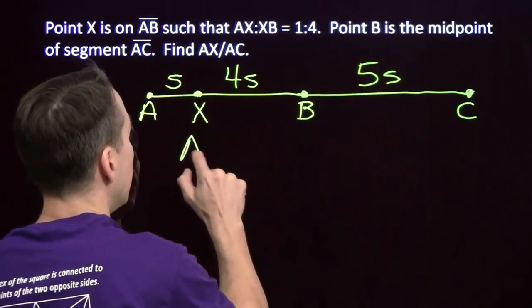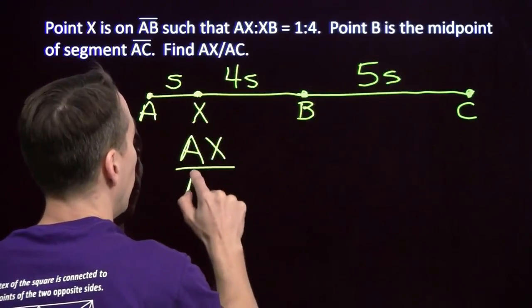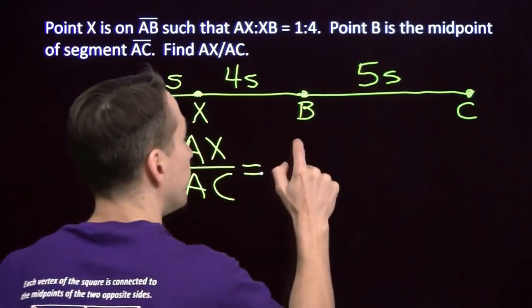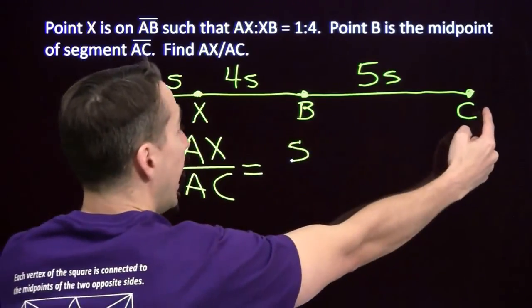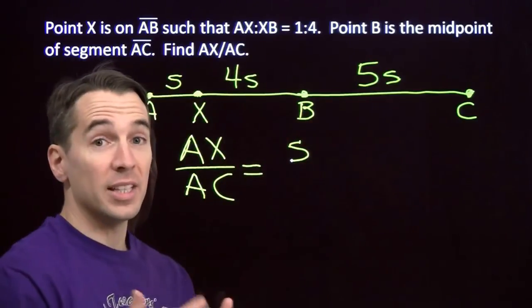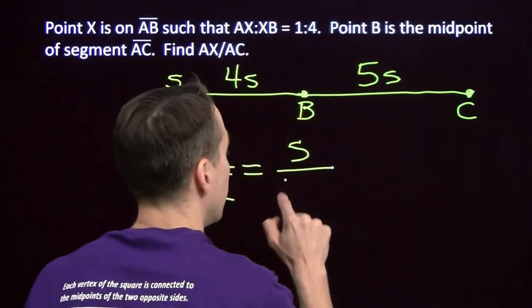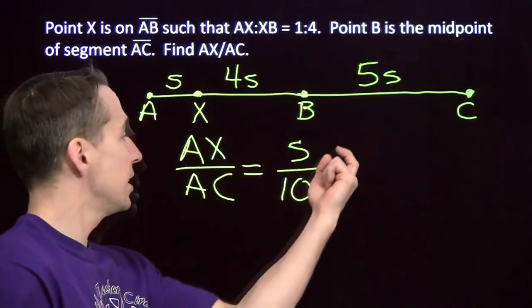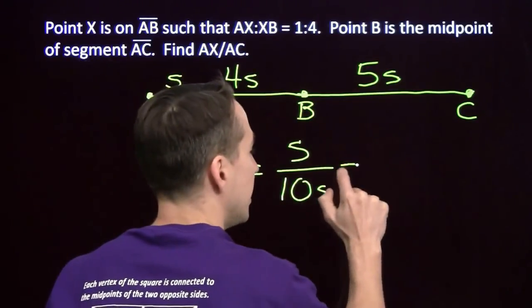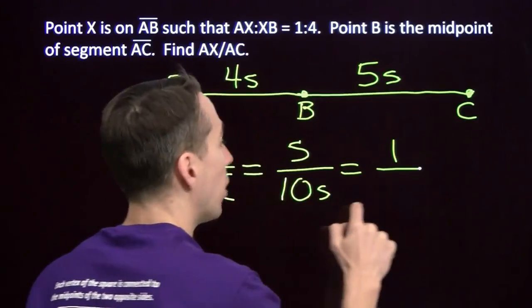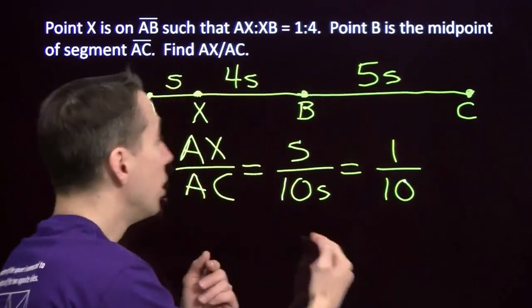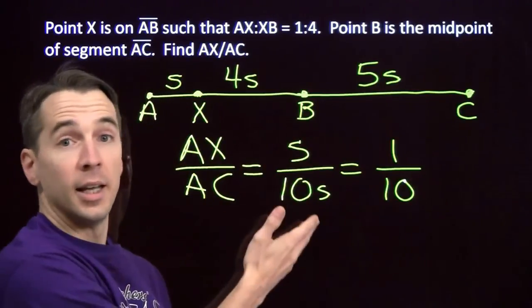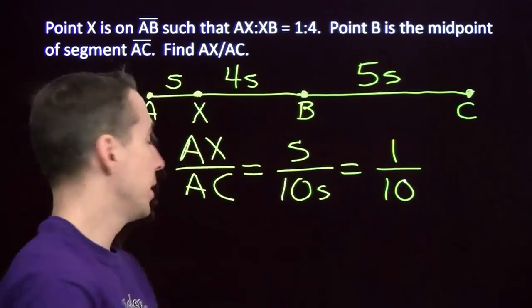We need to find AX over AC. And we know that AX is S. And we know that AC is S plus 4S plus 5S is 10S. So this ratio, this fraction, AX over AC is S over 10S. The S's cancel out. So no matter what S is, no matter what these lengths actually are, AX over AC is 1 over 10. And we're done with this problem, on to the next one.